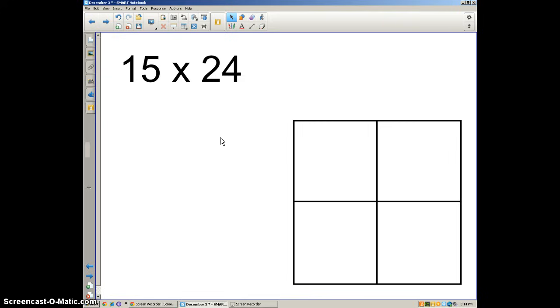So if we look at a problem like this, 15 times 24, something that you guys have done a million times before. We use a strategy called the area model or array model, or we've also talked about it as thinking inside the box. If we were to solve 15 times 24 using the area model, it would look something like this.